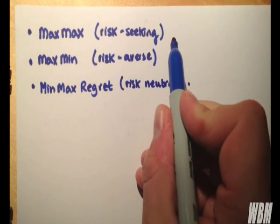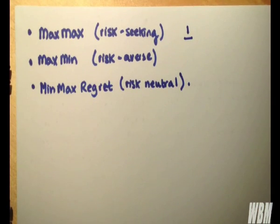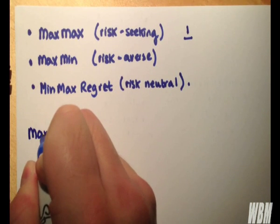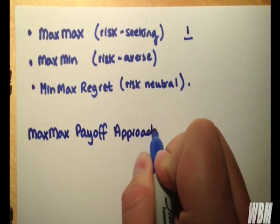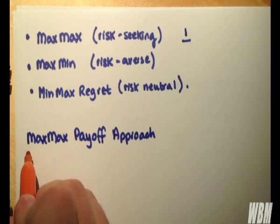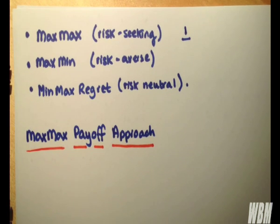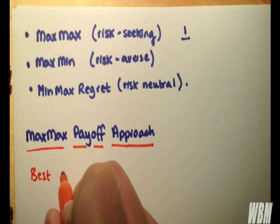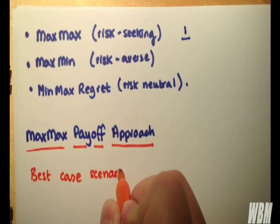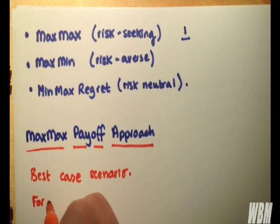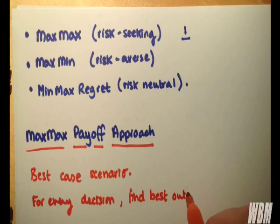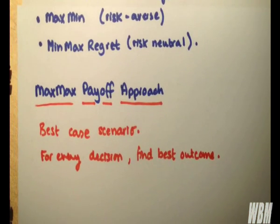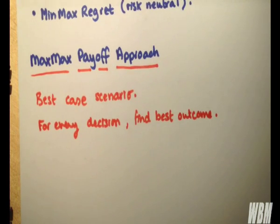So the first choice we're going to look at is the max-max approach. In this approach, we're concerned with the best-case scenario. So for every decision, we want to find the best outcome. So if you're really optimistic, this will probably be your method of choice. And then we find the maximum of these maximum payoffs. So let's go through the table.